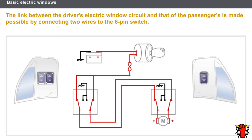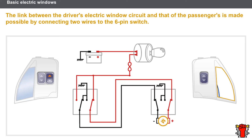A link between the two circuits is needed to operate the passenger's electric window. This link is made possible by connecting two wires to the six-pin switch. Pressing the driver switch activates the passenger side motor. The motor operating direction and the passenger side window movement depend on which way the switch is moved.